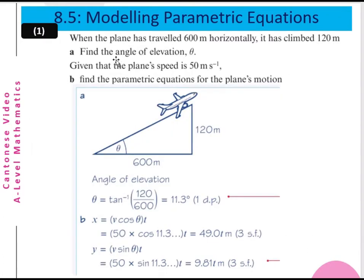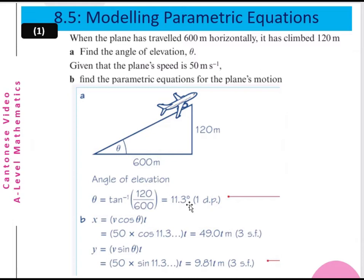Part a: Find the angle of elevation θ. If the pen has traveled 600 meters in the x direction and 120 meters in the y direction, then θ equals the inverse tangent of 120 over 600. So the angle is 11.3 degrees.